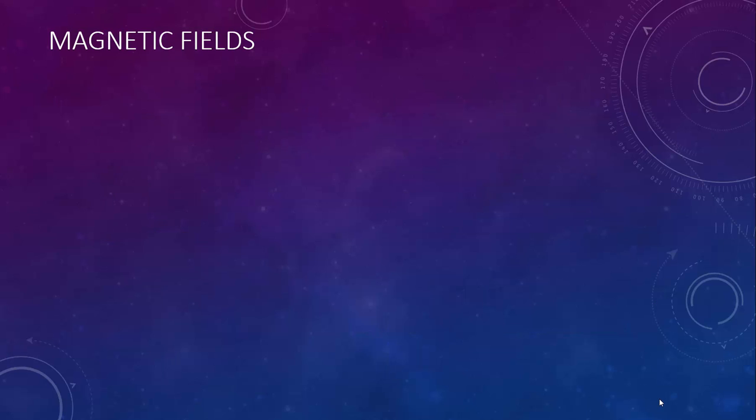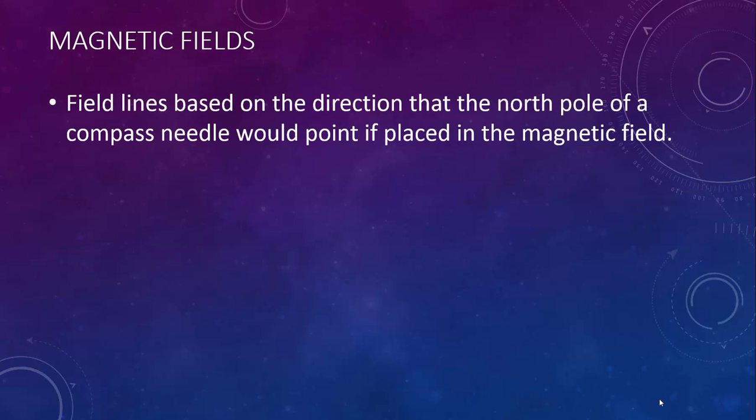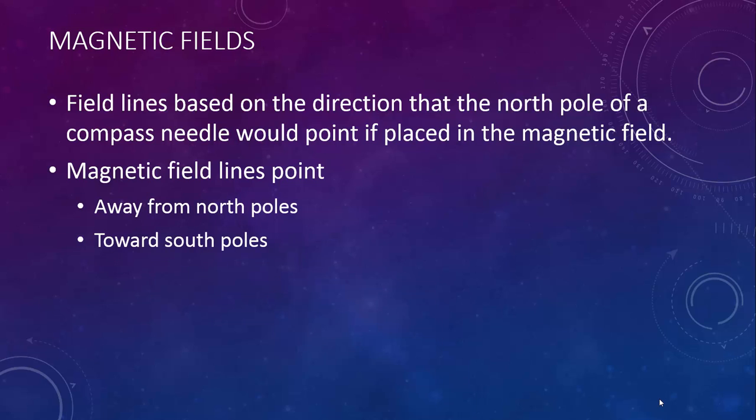Just like we looked at electric fields, we also want to look at magnetic fields. The field lines in a magnetic field are based on the direction that the north pole of a compass needle would point if placed in the magnetic field. This means that magnetic field lines will point away from north poles and toward south poles.